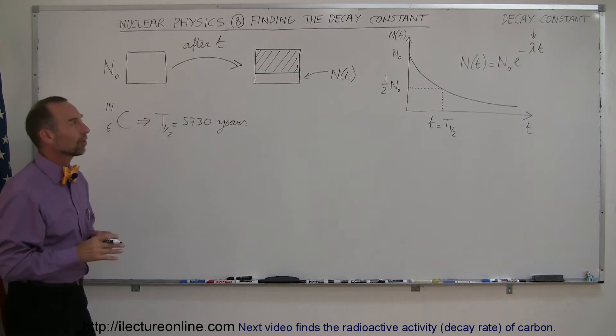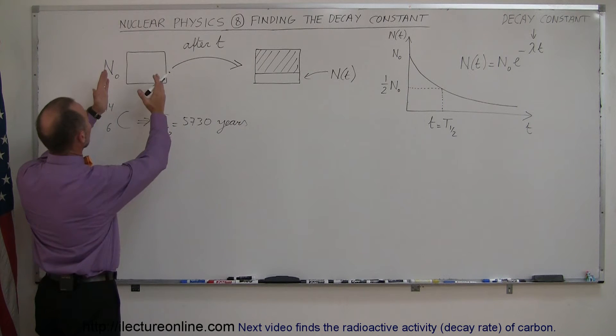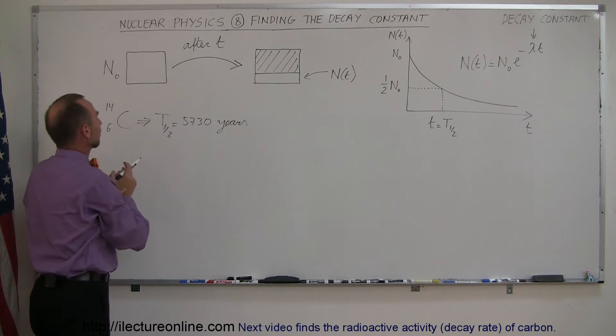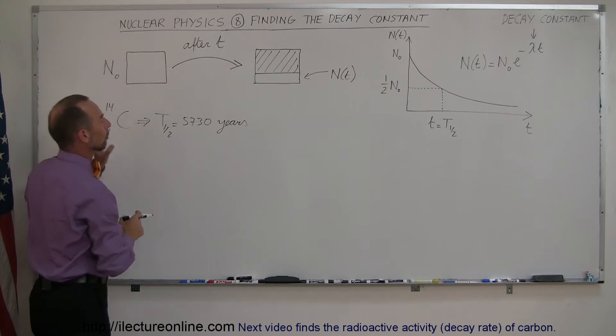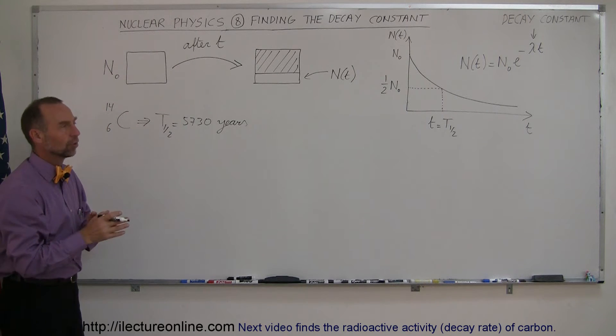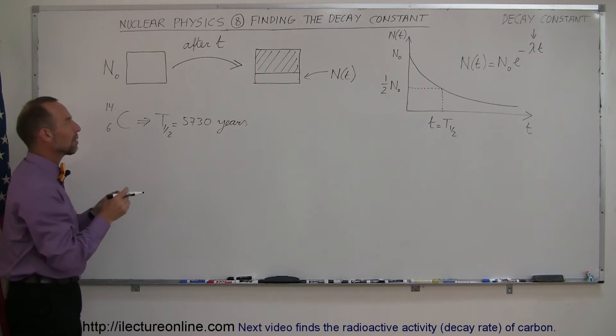But what does that really mean, the decay constant? Well, imagine that you start out with a certain amount of initial radioactive material, let's say that this is carbon-14, and N sub-naught represents the initial amount, sometimes the number of radioactive nuclei in that sample.